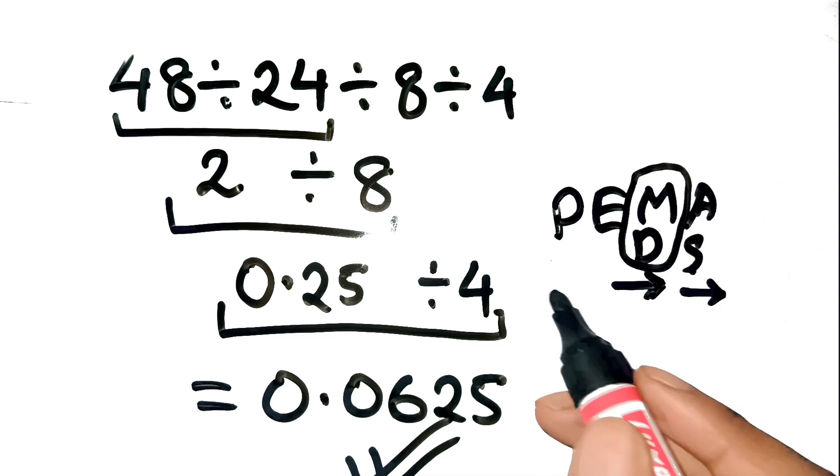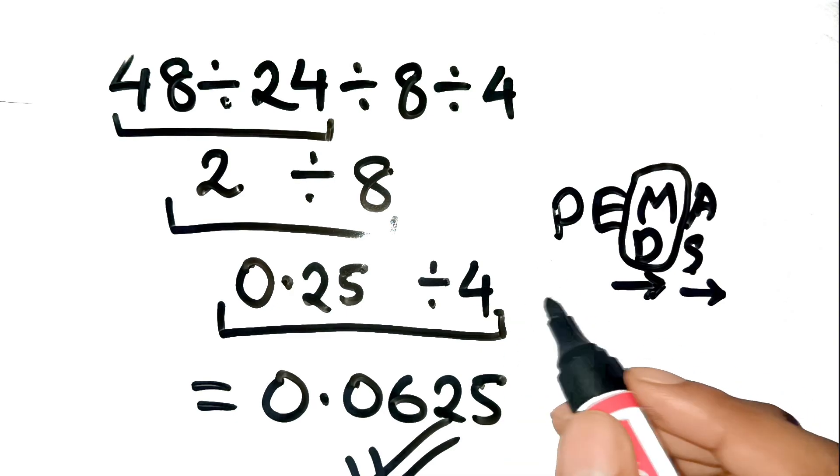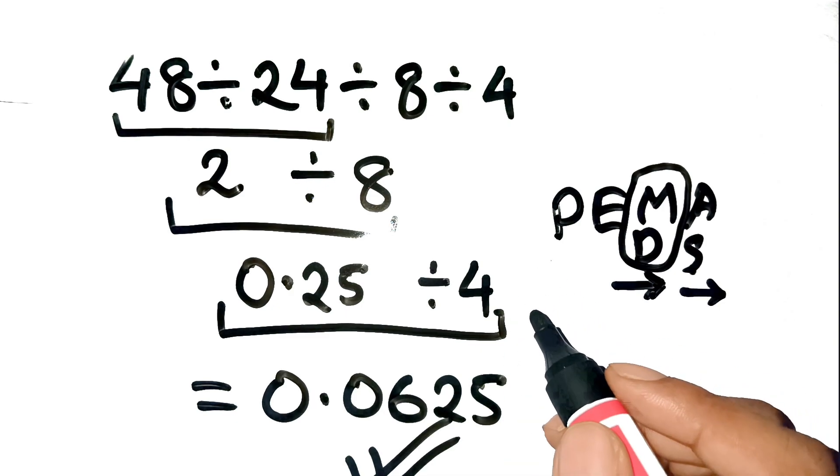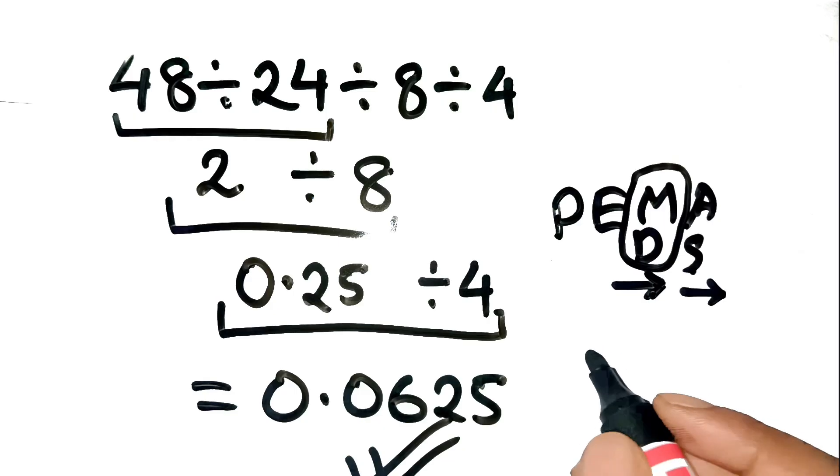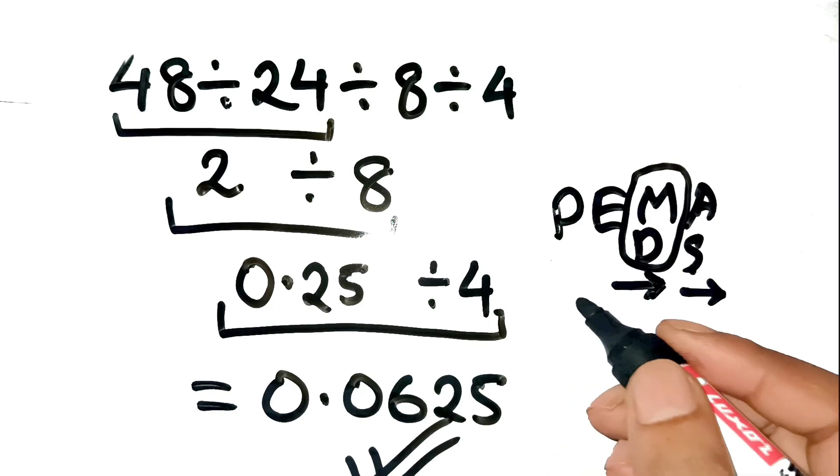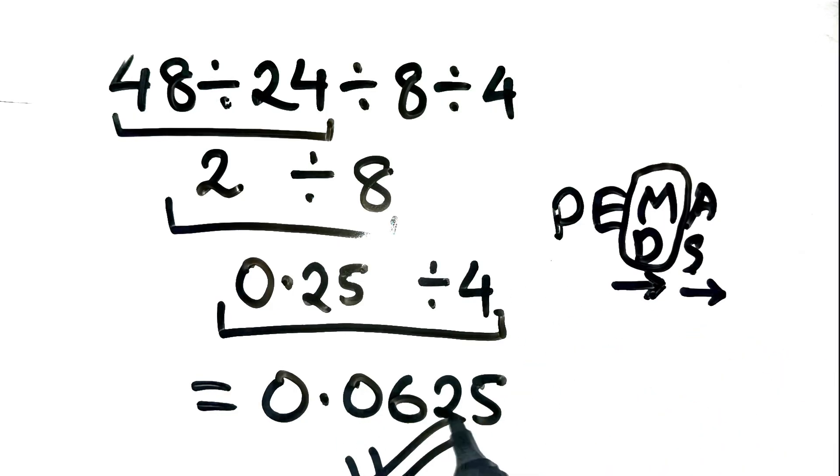Way smaller than most people expect. That's why going strictly left to right with division is super important. If you don't believe it, type it exactly into your calculator. You'll see 0.0625.